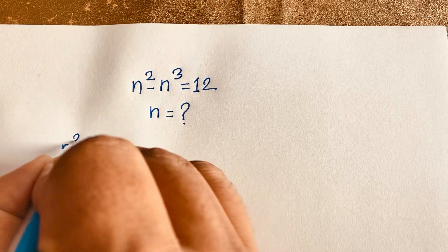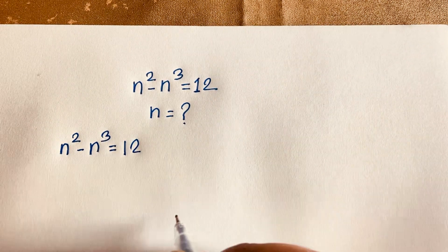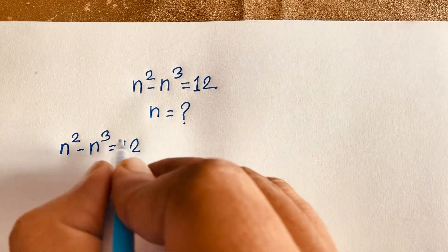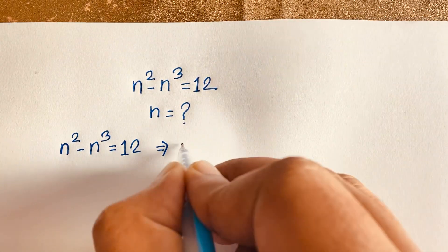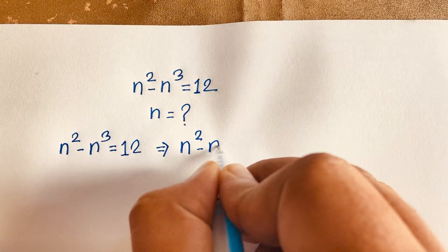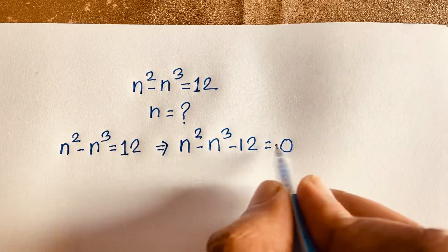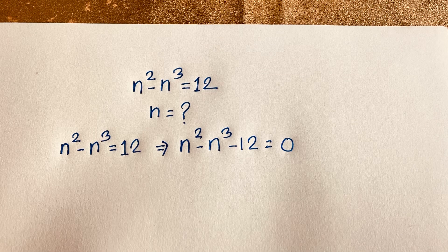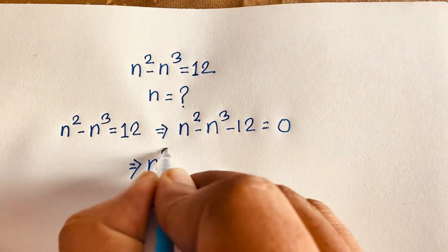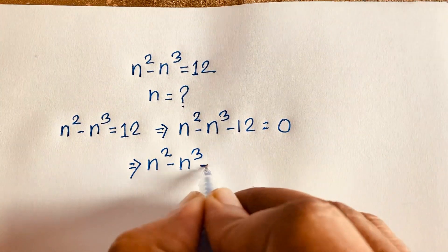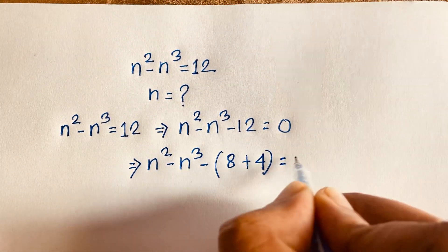It will be n squared minus n cubed is equal to 12. Now if I move this 12 to the other side it will be negative, so the expression becomes n squared minus n cubed minus 12 is equal to 0. We can see that 12 equals 8 plus 4.